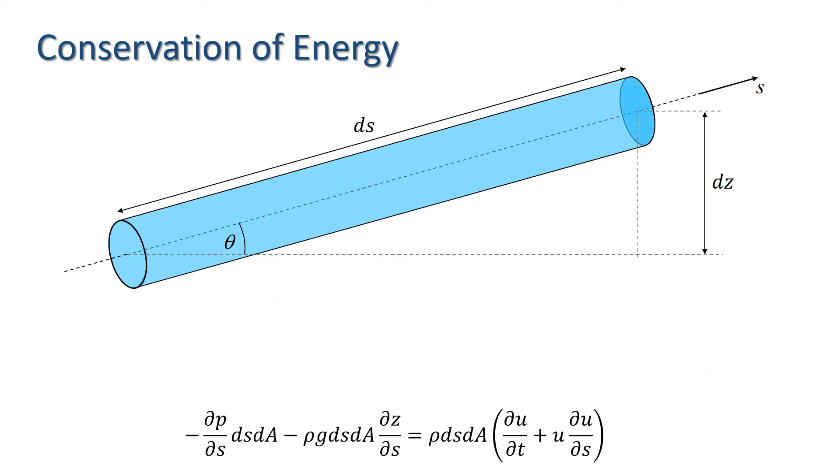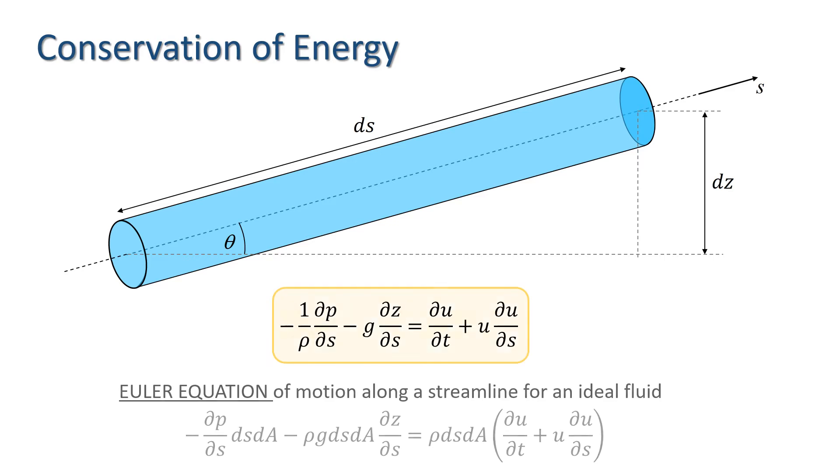Now, if we divide throughout by rho dS dA, we have this equation. This equation is called the Euler equation of motion along a streamline for an ideal fluid.